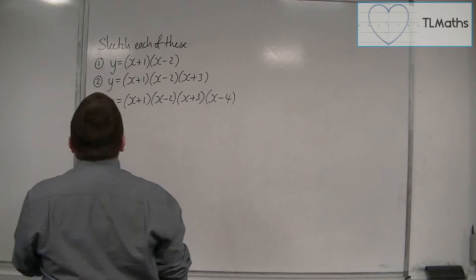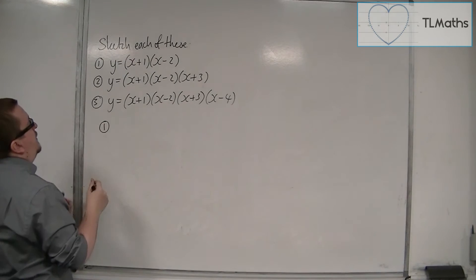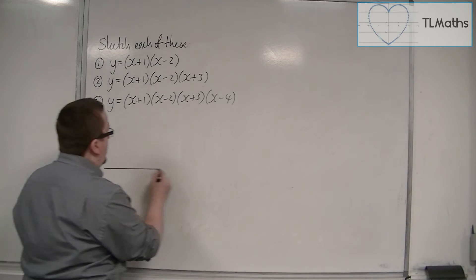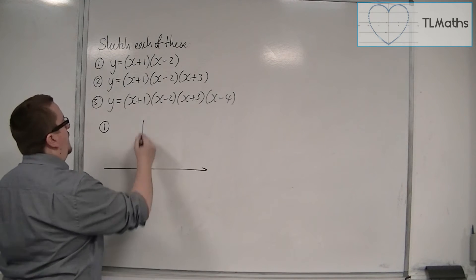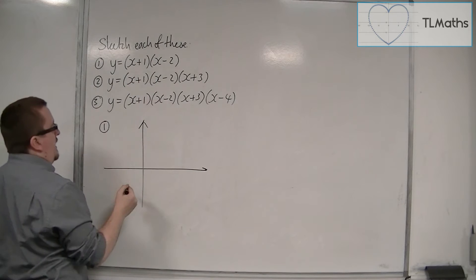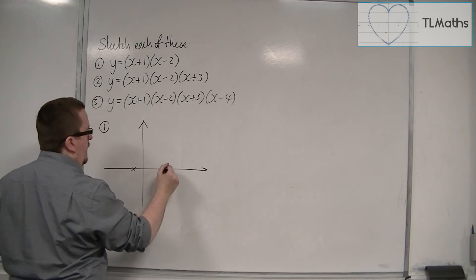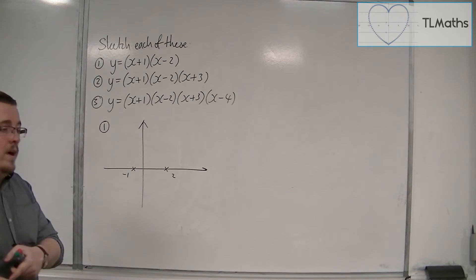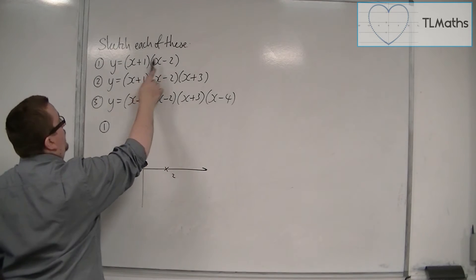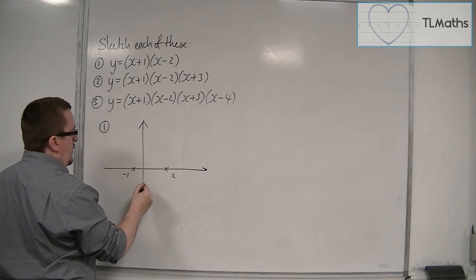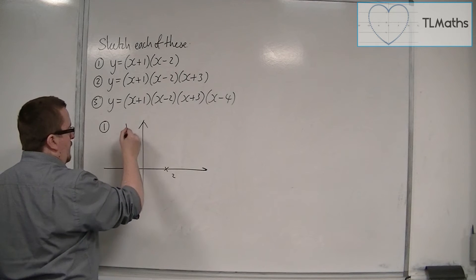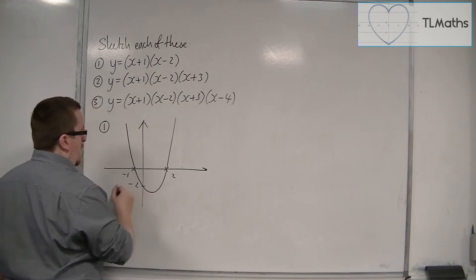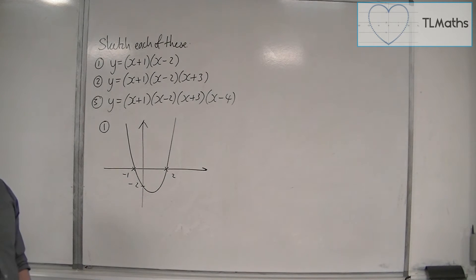Starting with number 1, it's just a quadratic, so y is equal to (x+1)(x-2). I can see that it is crossing the x-axis at -1 and 2, and it will be crossing the y-axis at 1 times -2, so -2, down here. The curve must do something like this, making sure the vertex is to the right of the y-axis.